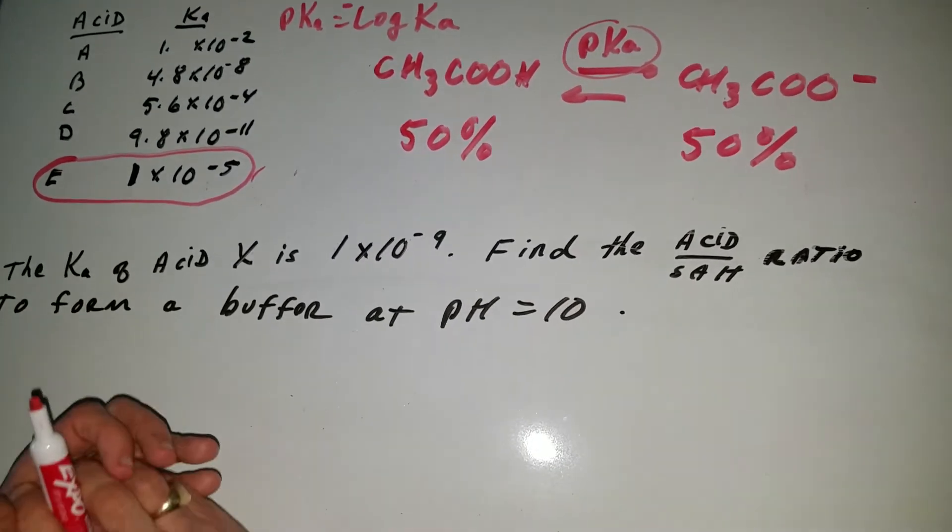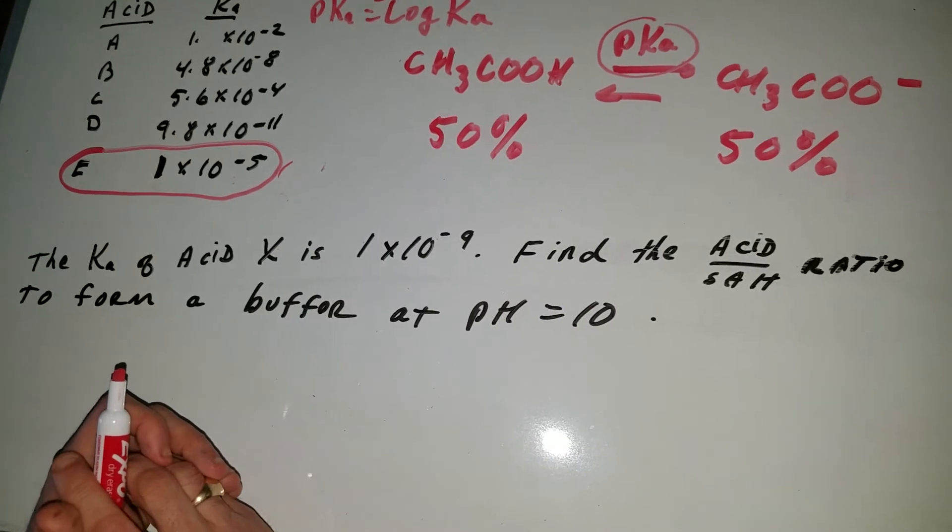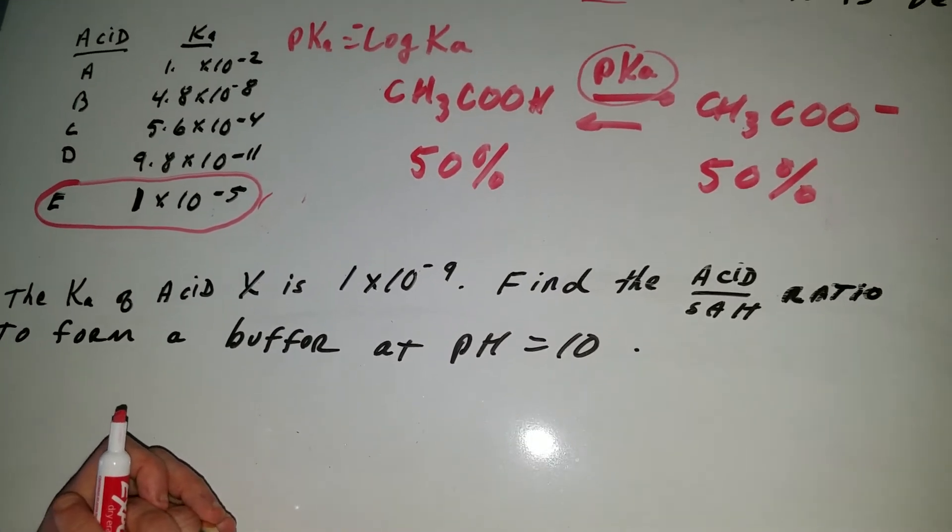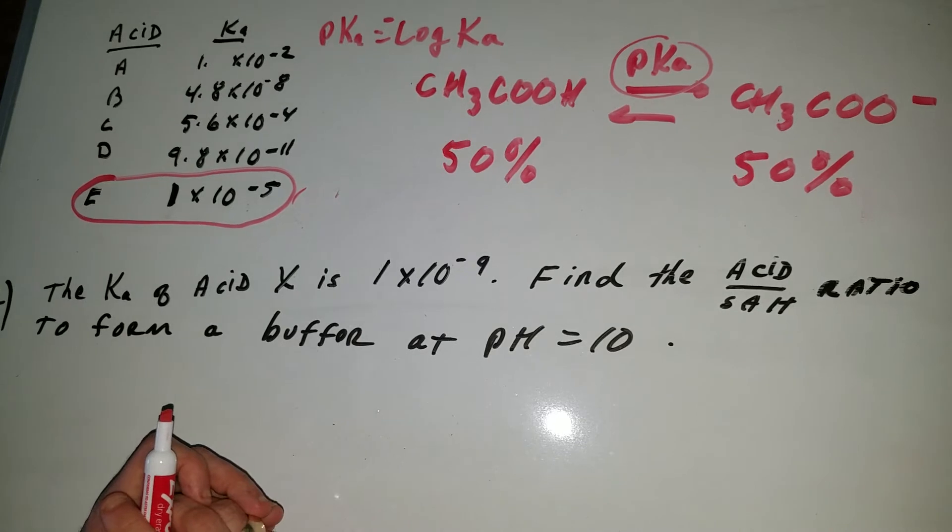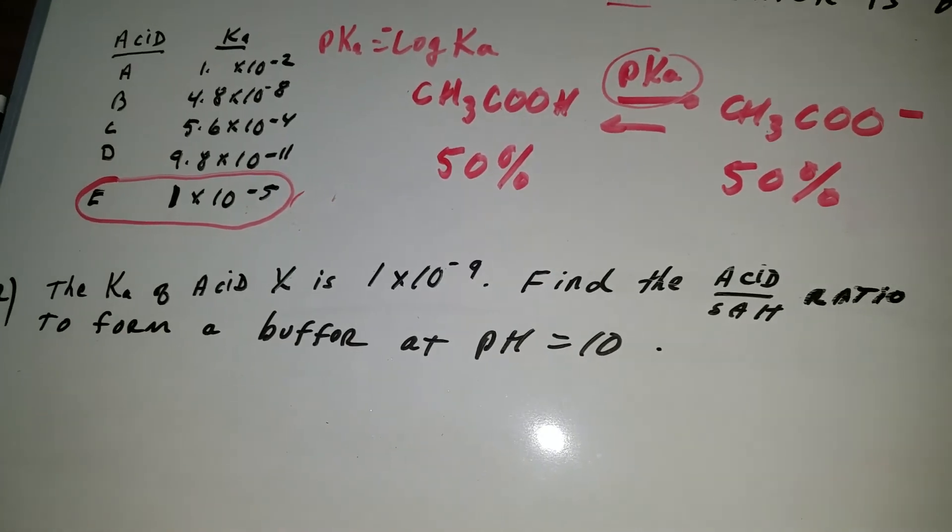Question number two. It says the Ka of an acid is 1 times 10 to the minus 9. Find the acid and salt ratio to form a buffer at pH 10.